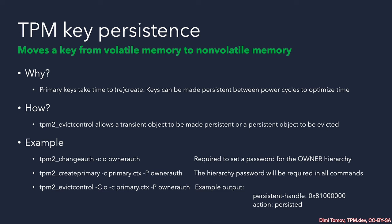Persisting a key is as easy as removing the key, which is why we need to make sure there is authorization control for the hierarchy — otherwise our security will be compromised. To change the authorization of a hierarchy or any TPM object, there is a special command called TPM2_ChangeAuth. Once we set an authorization to the hierarchy, what's important is to have our object created or loaded in transient memory, then instruct the TPM with the object, its authorization, and request to make it permanent.